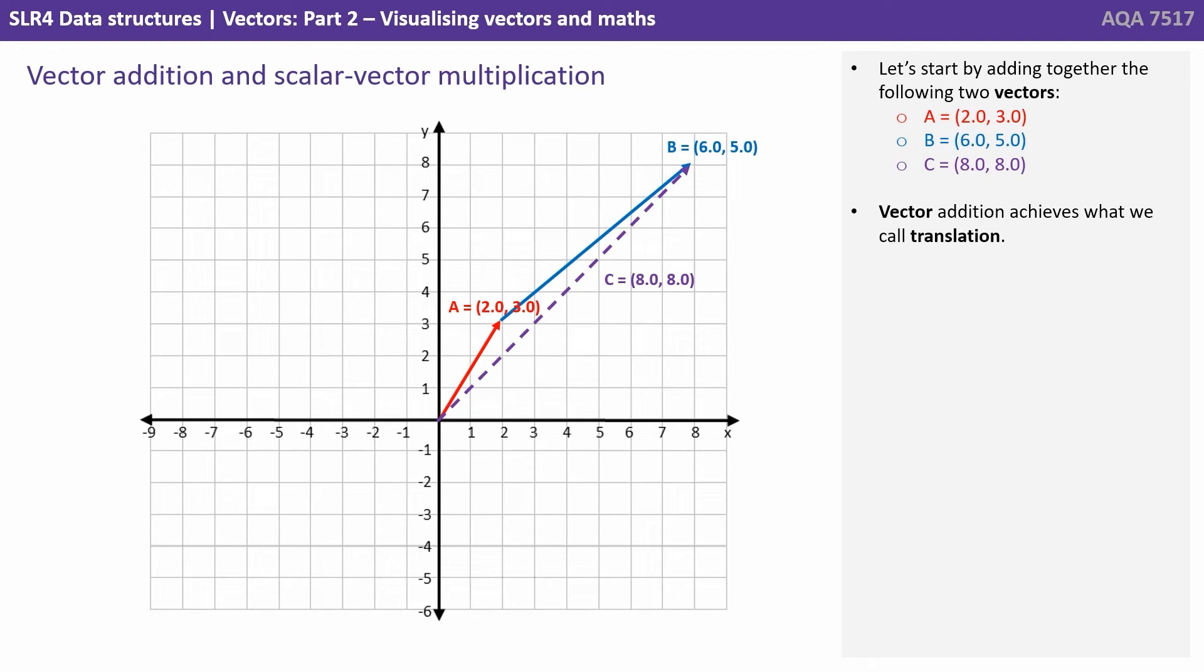And we've added the second two values of A and B, that's the 3 and the 5 to get 8. So when we add these two vectors together, vector C is (8, 8), and that's plotted as the purple line.